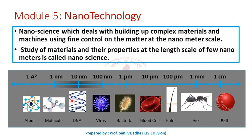Here is a comparison of sizes of different objects. A ball diameter is measured in centimeters; an ant in millimeters; a hair is around 100 micrometers; a blood cell around 10 micrometers; bacteria around one micrometer; a virus around 100 nanometers; DNA around 10 nanometers; a molecule around one nanometer; and an atom is around 0.1 nanometer. In nanotechnology we deal with materials in the size range of one to 100 nanometers.